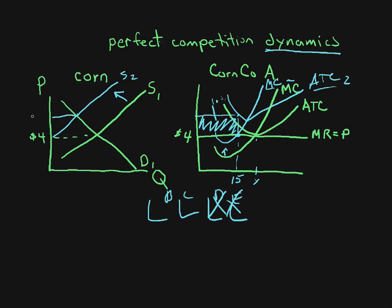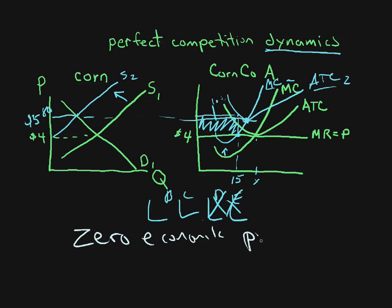Look what's happened: the price has gone up — say $5.80. At $5.80, this line shifts just to this point right here. It's at that point where marginal revenue equals marginal cost again, and we get zero economic profits. That is key.